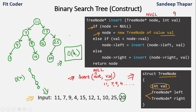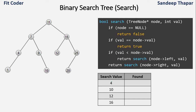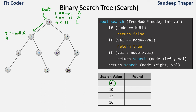Now let's see how to search a node in the tree. For search value 4: we check node 11 — not null, not equal to 4, and 4 is less than 11 so we go left to 7. At 7 — not null, not equal to 4, and 4 is less than 7 so we go left to 4. At 4 — not null, 4 equals 4, so we return true. Value 4 is present in the tree.